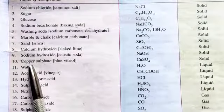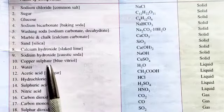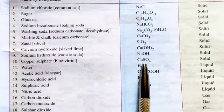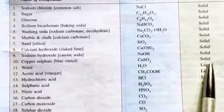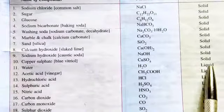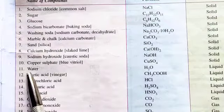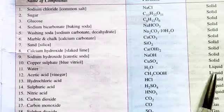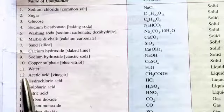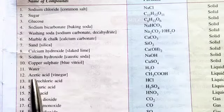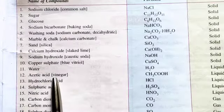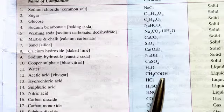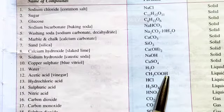10. Copper sulphate, which is also known as blue vitriol — its formula is CuSO4 and its state is solid. 11. Water — its formula is H2O and its state is solid. 12. Acetic acid, which is also known as vinegar — its formula is CH3COOH and its state is liquid.